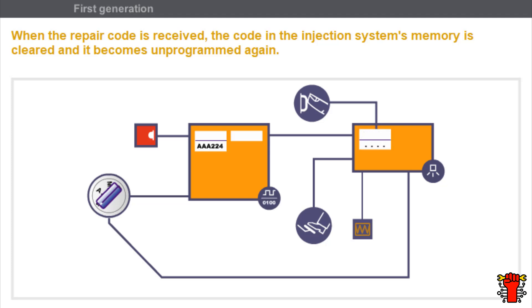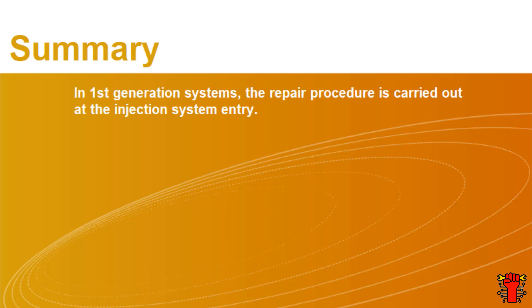the code in the injection system's memory is cleared and it becomes unprogrammed again. From this moment, the vehicle no longer has any immobilizer protection. In this section, we have looked at the following points. In first-generation systems, the repair procedure is carried out at the injection system entry.